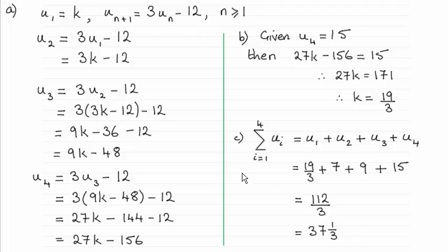So just to take you through this, we were given this recurrence relationship here: u(n+1) equals 3u(n) minus 12. We're given the first term u1 equals k.